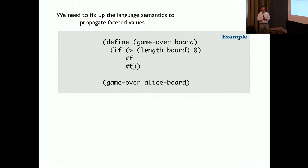To make it work, we also need to fix up the language semantics to propagate the facet values. For example, we have a function gameOver that takes the board as an input and check if it's empty or not, to determine if it's game over or not.